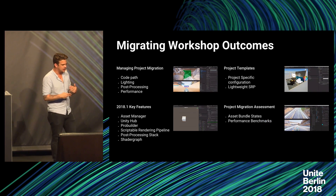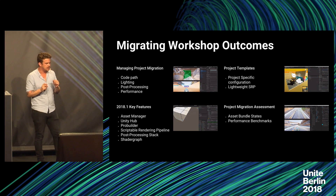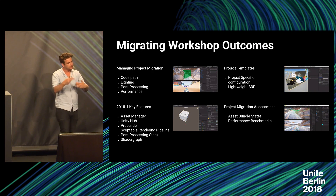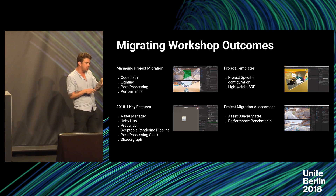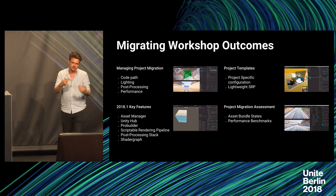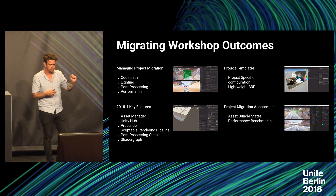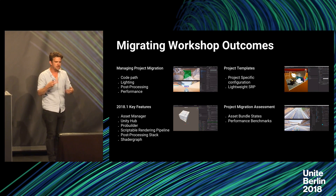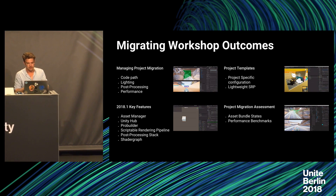Looking at how we're fitting that in: with project migration we're going to look at code paths, lighting, and post-processing — features you've probably been hearing about in the keynotes. Key features we'll work on include the Asset Manager, the Unity Hub for project management, the Scriptable Rendering Pipeline, the post stack, and Shader Graph — which is a really important one when moving over to 2018.1, giving you more customized shaders for your projects. We'll also look at how that works with the Lightweight Render Pipeline, and we'll be working on benchmarking.